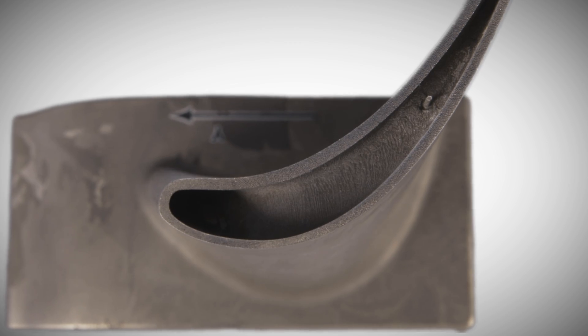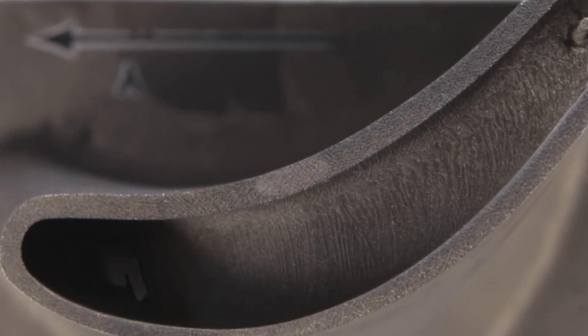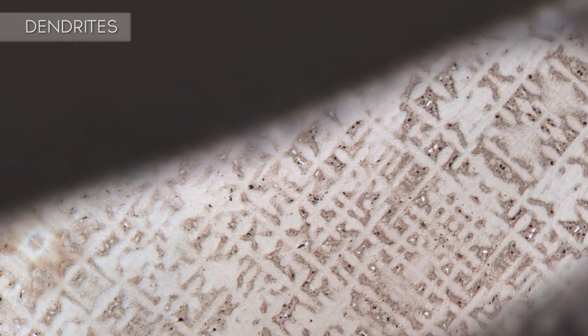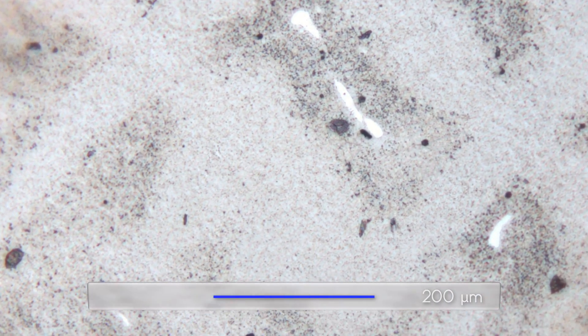As we approach, the first microstructural features we see are little bright crosses. These are the eutectic regions which have originally formed during solidification.